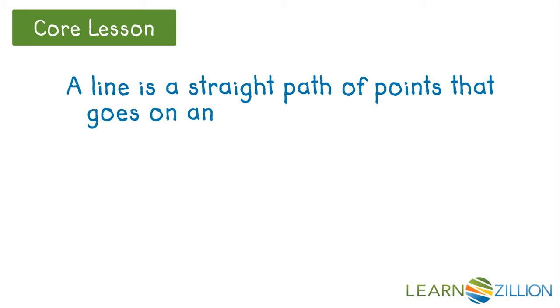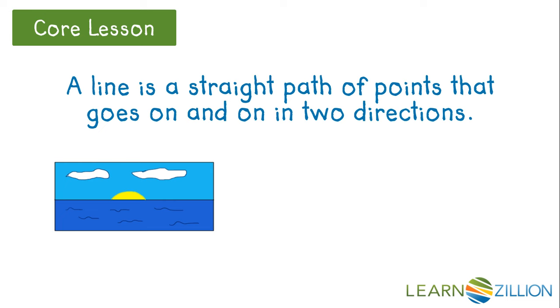A line is a straight path of points that goes on and on in two directions. Think of a horizon. We would call this line AB, with a little line above it. We could also call and label it BA. It's the same line.